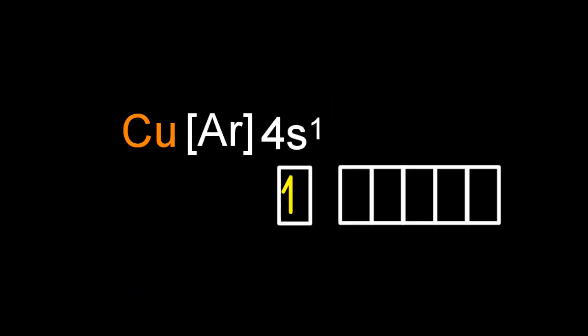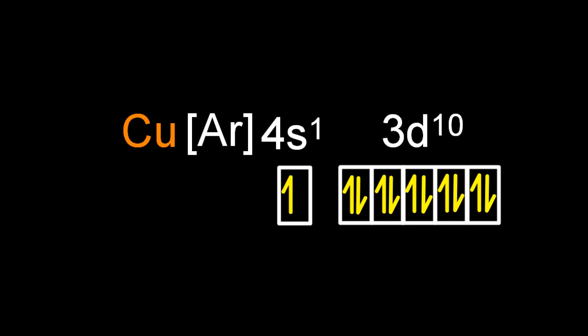Remember, that's one of those weird ones. Copper and chromium are the weird ones. Putting in the arrows to represent the electrons, following Aufbau, Hund and Pauli rules.